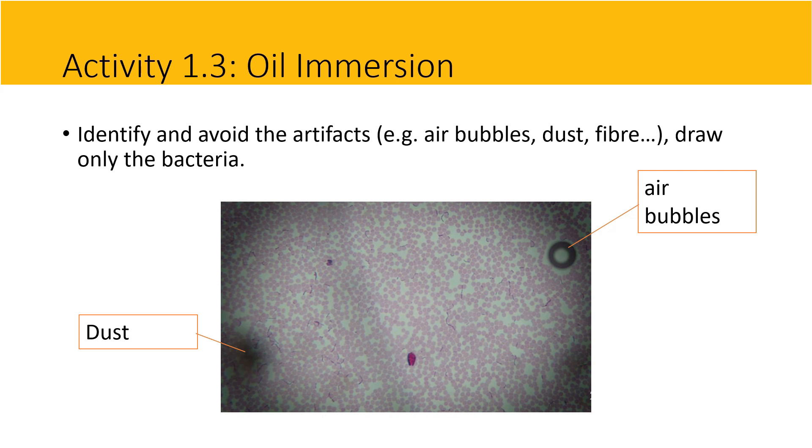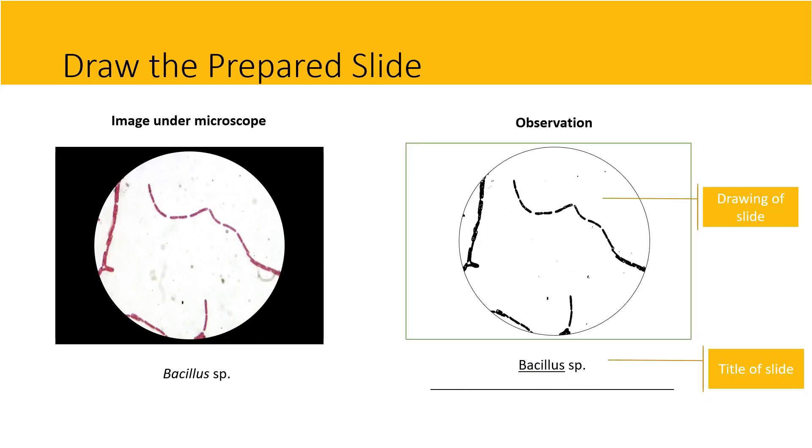Artifacts like dust and air bubbles should not be drawn in your observation. On your screen now are examples of the prepared slides drawn after observation is made. On your left is the image under the microscope, and on your right is the image drawn according to the view under the microscope.